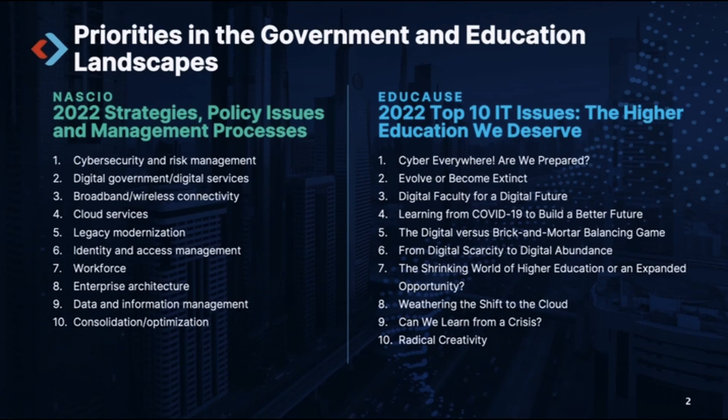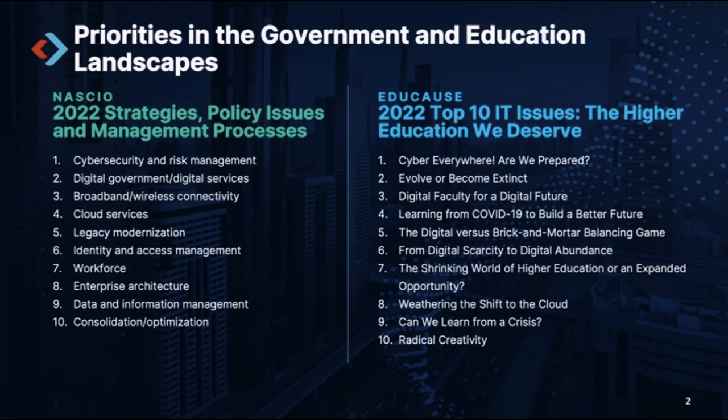NACIO also outlines enterprise architecture as a key priority for 2022 — a top-down look at how entities and agencies work, something that everyone will play a part in. We can't overlook data and information management either. As we look at increasing privacy needs, compliance requirements, and all across the spectrum in different places, we're going to have to have a better handle on what we're storing and why we're storing it. Data and information management will continue to play a prevalent role in IT organizations in 2022 and forever beyond.